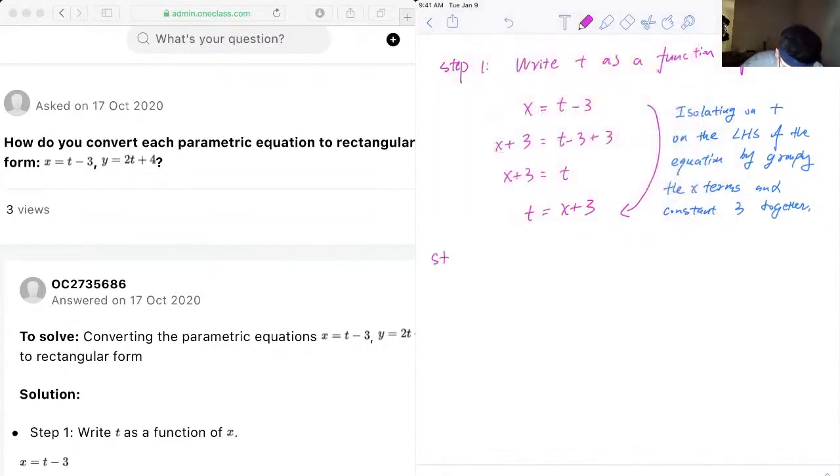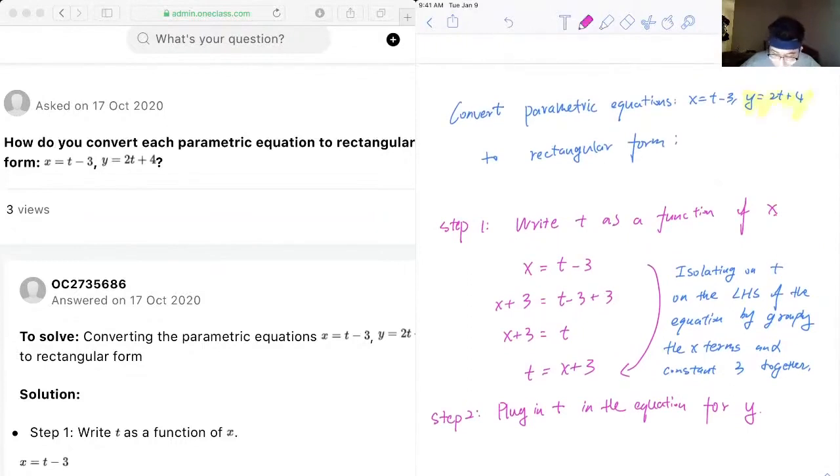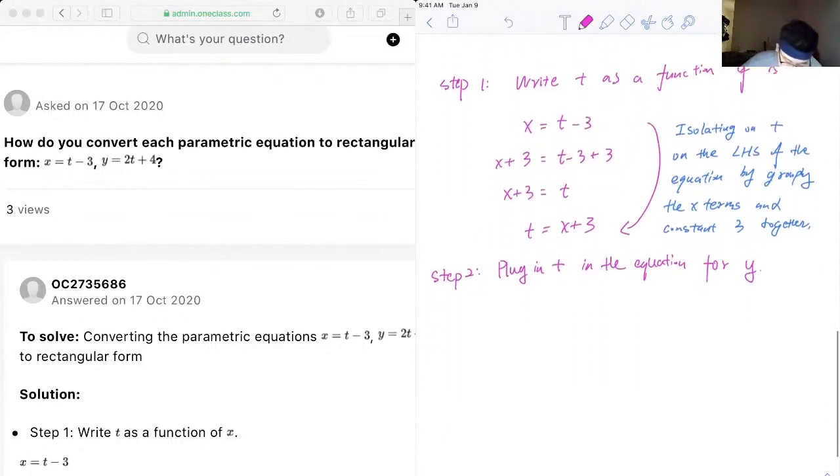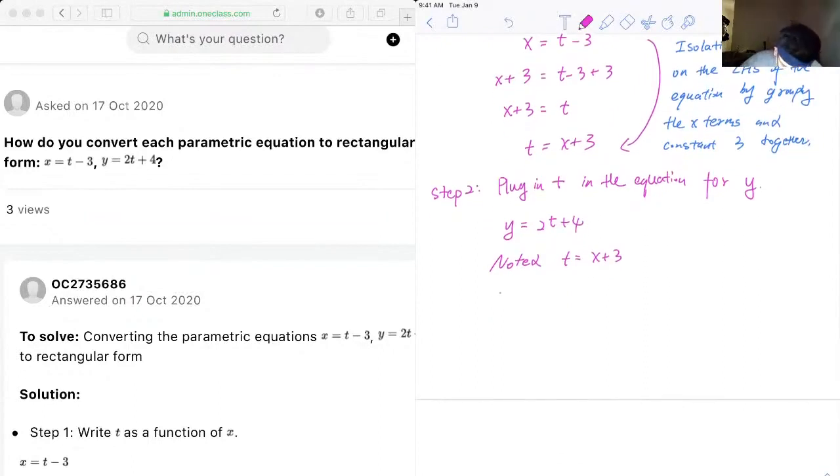And for our next step, we plug in t in the equation for y. So we know from the given question y equals 2t plus 4. Let's copy that down: y equals 2t plus 4. And note that t equals x plus 3, which is a result from step one, and we plug that in. So that becomes y equals 2 times (x plus 3) plus 4.